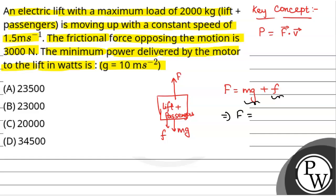So for minimum power, F should be minimum, that is the minimum force required to move the lift. So that will be equal to...